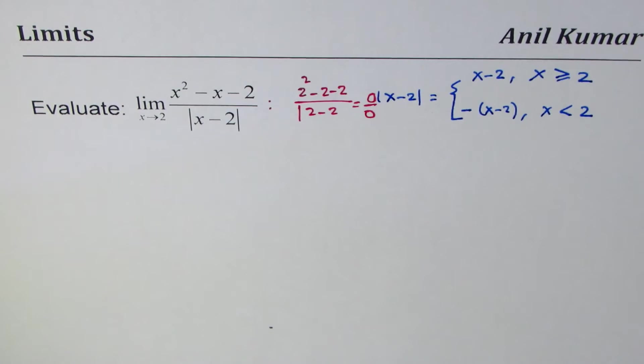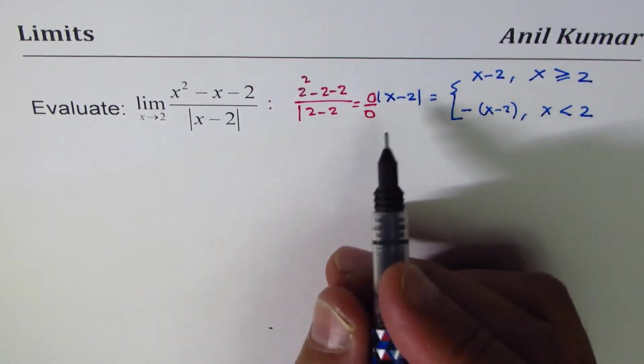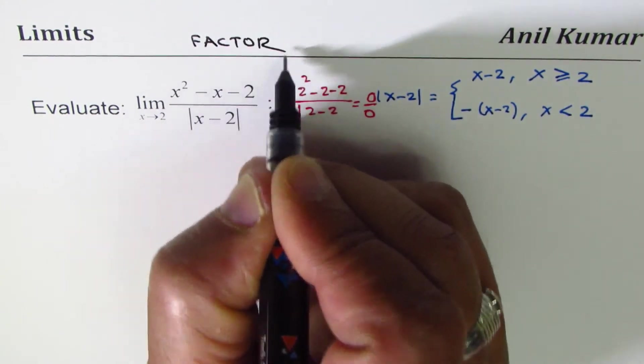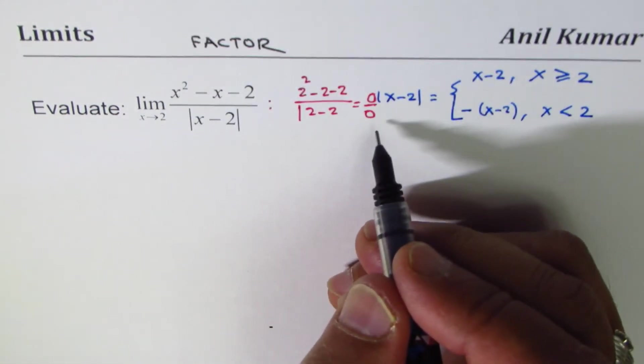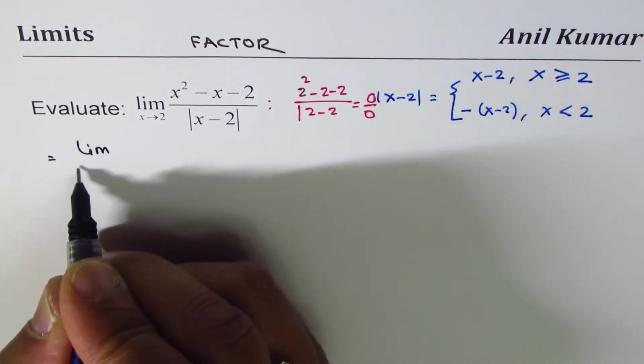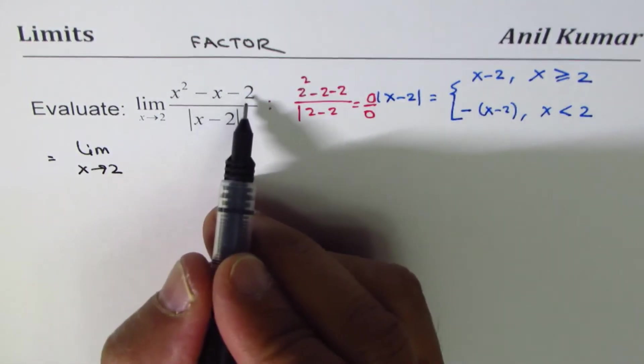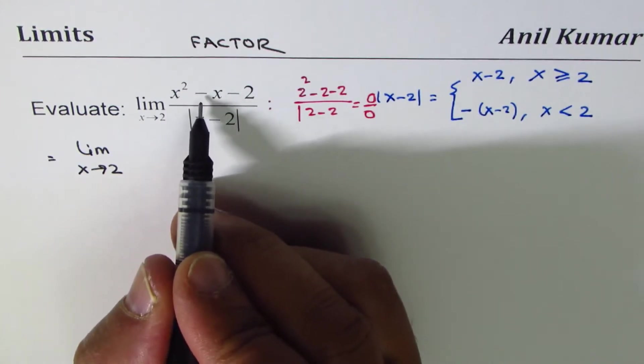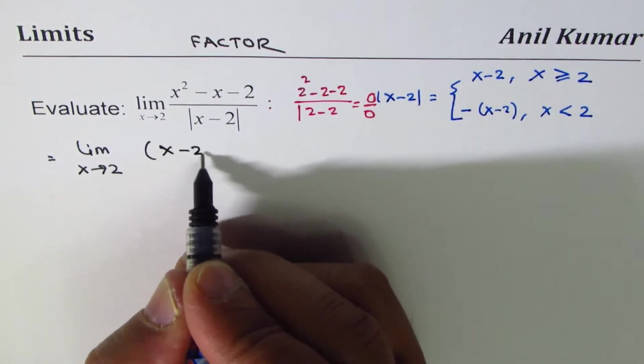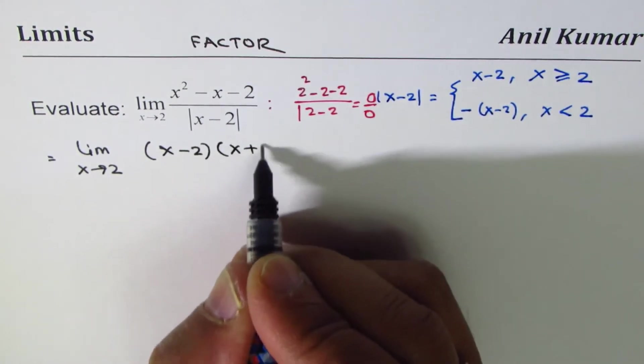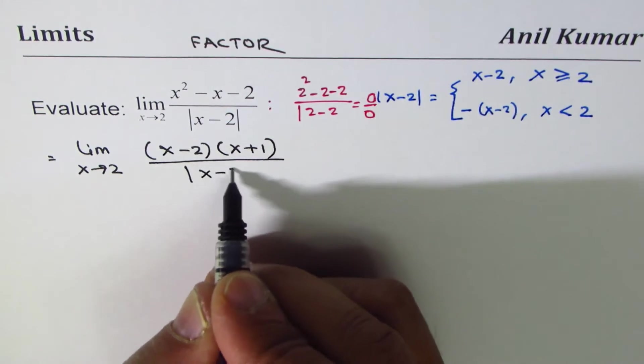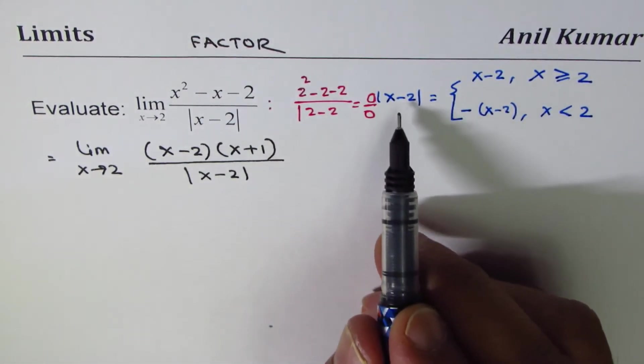The strategy here will be to factor and cancel that common factor. We can rewrite this as limit x approaches 2 of x squared minus x minus 2. This quadratic equation can be written as x minus 2 times x plus 1 divided by absolute value of x minus 2.